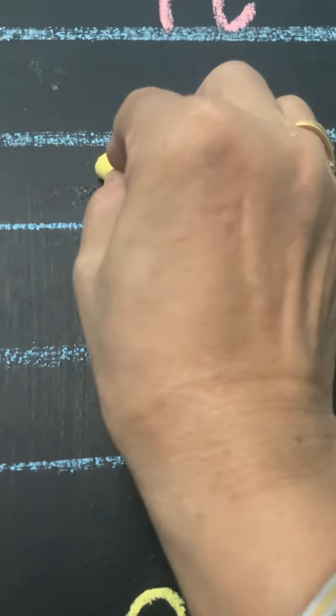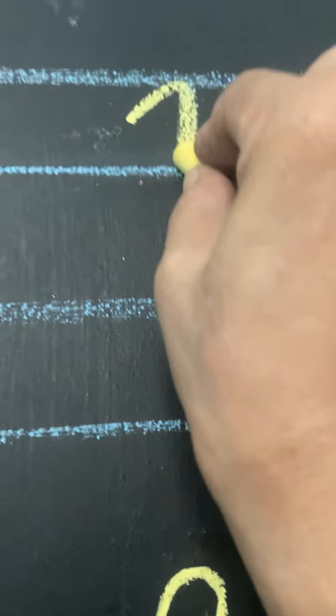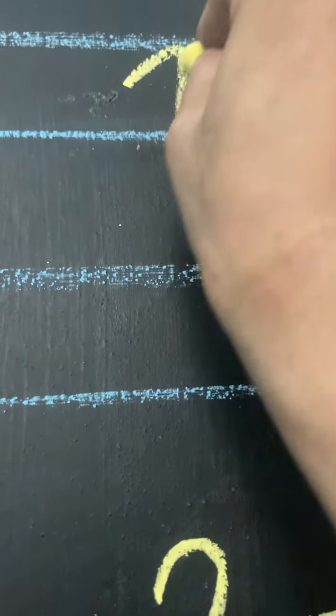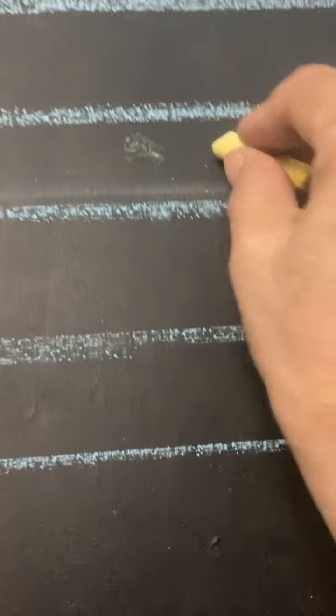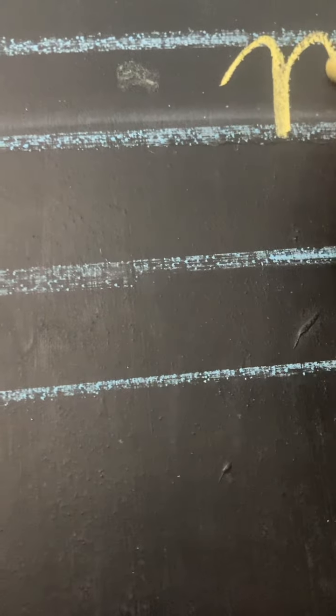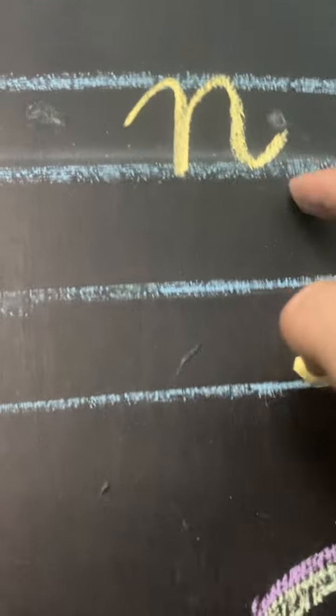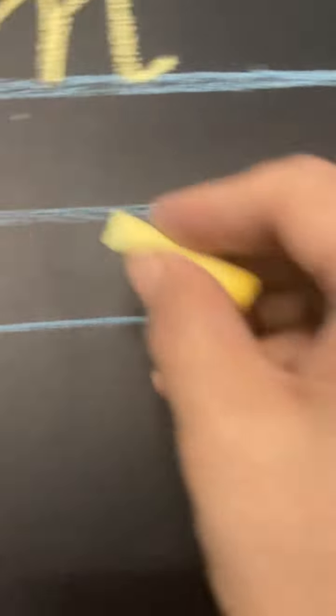Let's start to write next one more time. Slanting line, standing line and a hump and make a flick. Very easy to write.